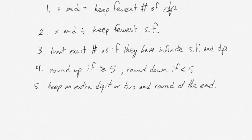Rule 3 says treat exact numbers as if they have an infinite number of sig figs and decimal places. Exact numbers are things like unit conversions. There are 12 inches in a foot, for example. That would be 12 point an infinite number of zeros. The fourth rule is if you have to round something, if it ends with 5 or greater, round up; round down if it's less than 5. Fifth rule, keep an extra digit or two when you're doing each calculation and round at the end.